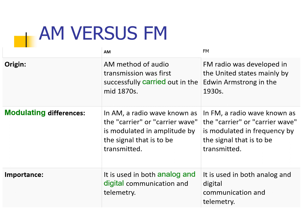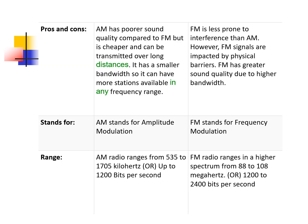You may pause the video to read the content of the table. Both AM and FM are used in analog and digital communication. AM has poorer sound quality compared to FM, but is cheaper and can be transmitted over long distances. This is why radio stations offering news broadcasting utilize AM as their carrier wave, so that the news can reach far places.